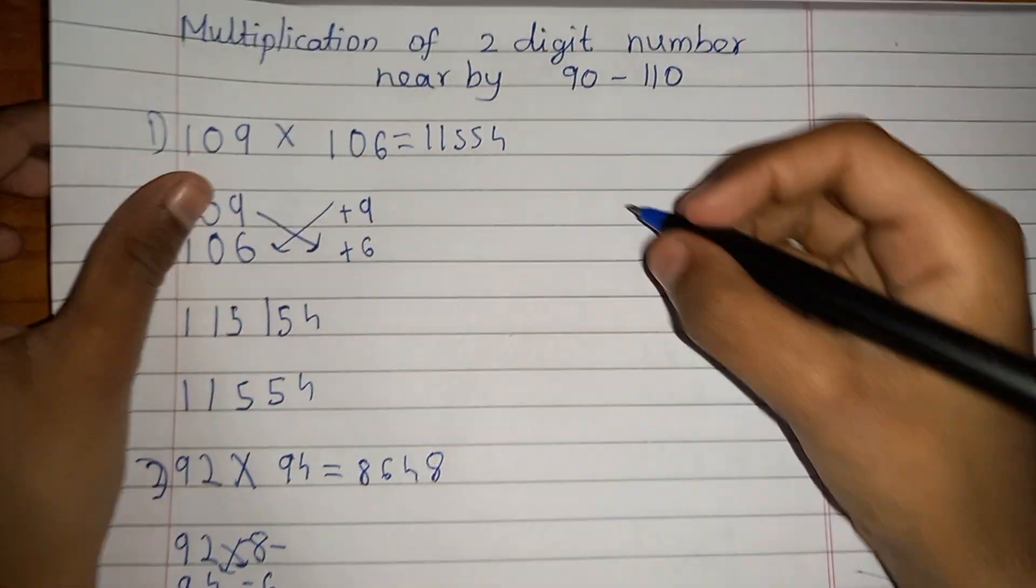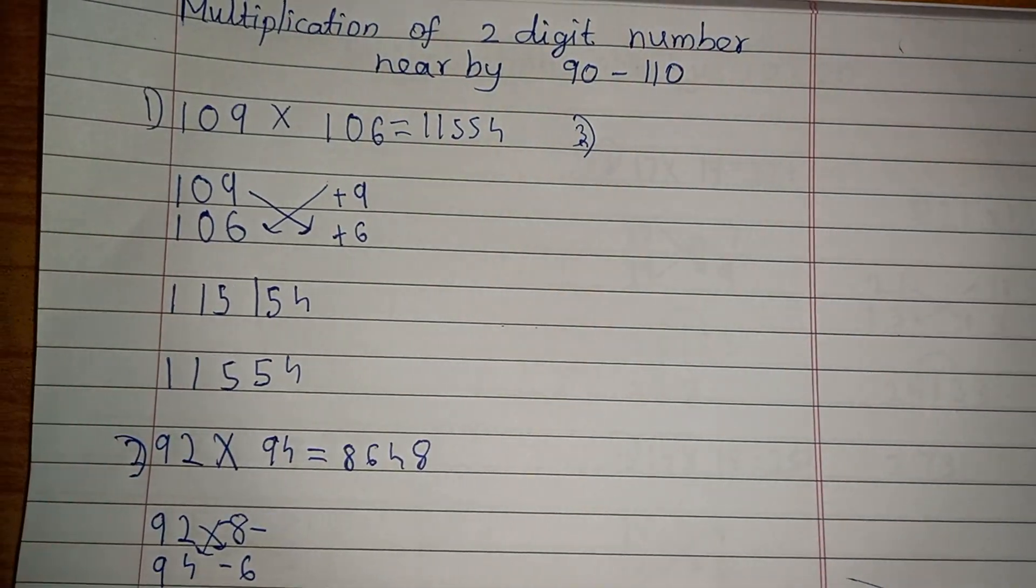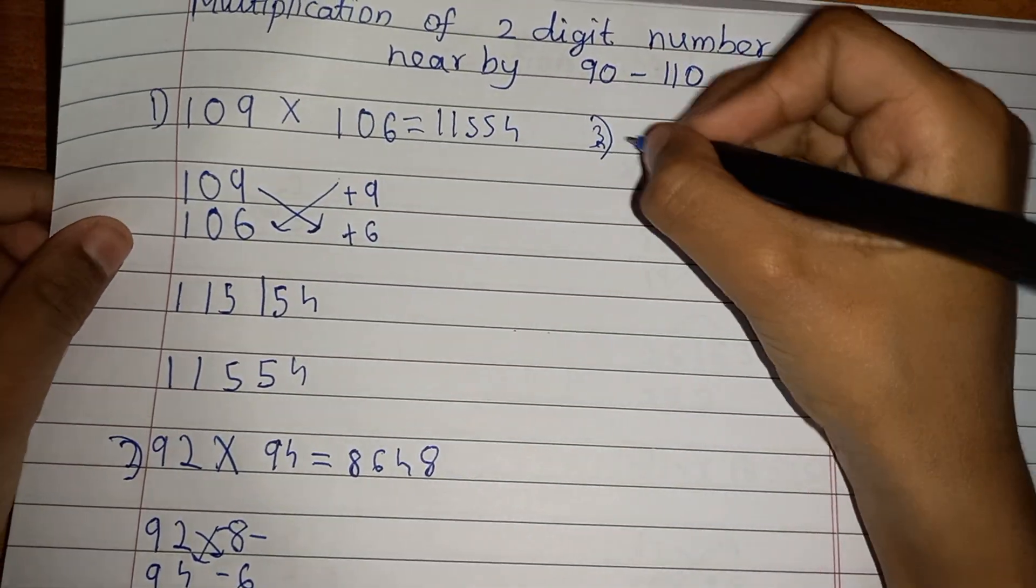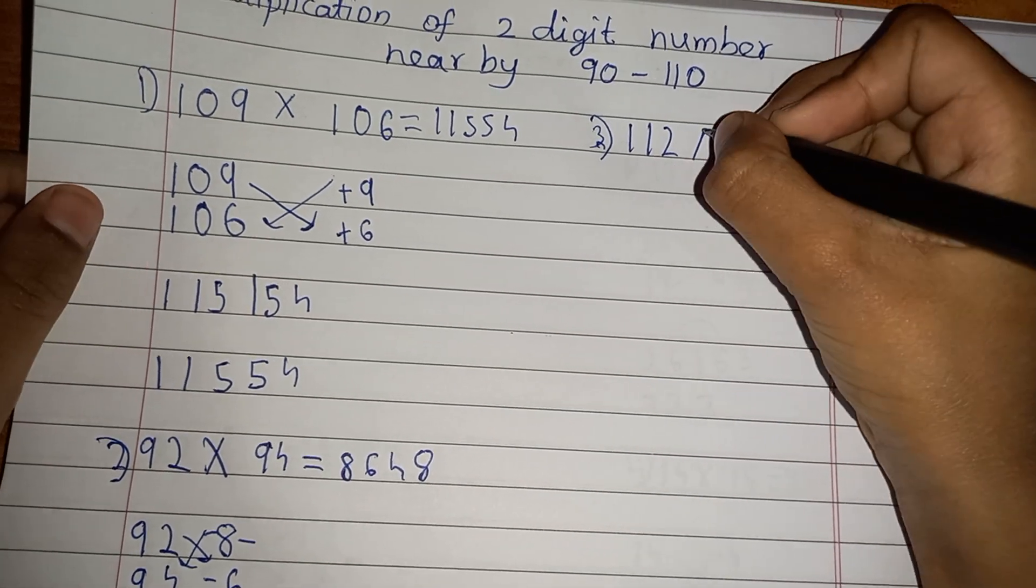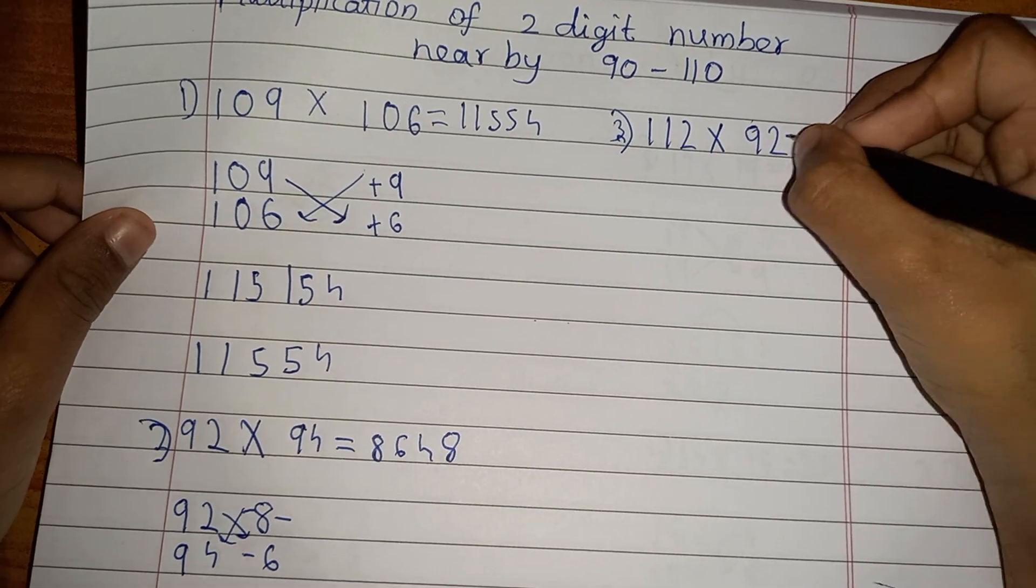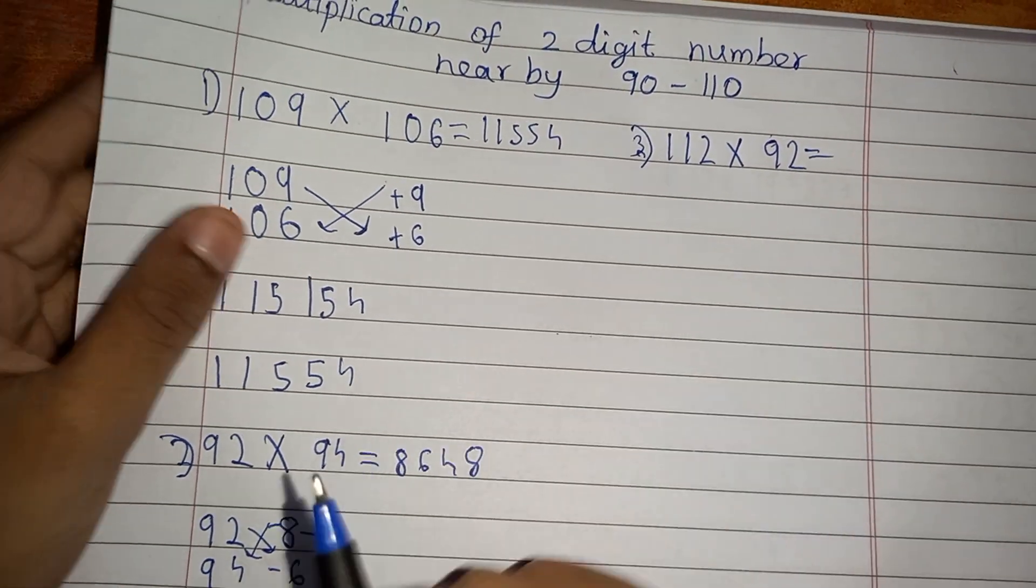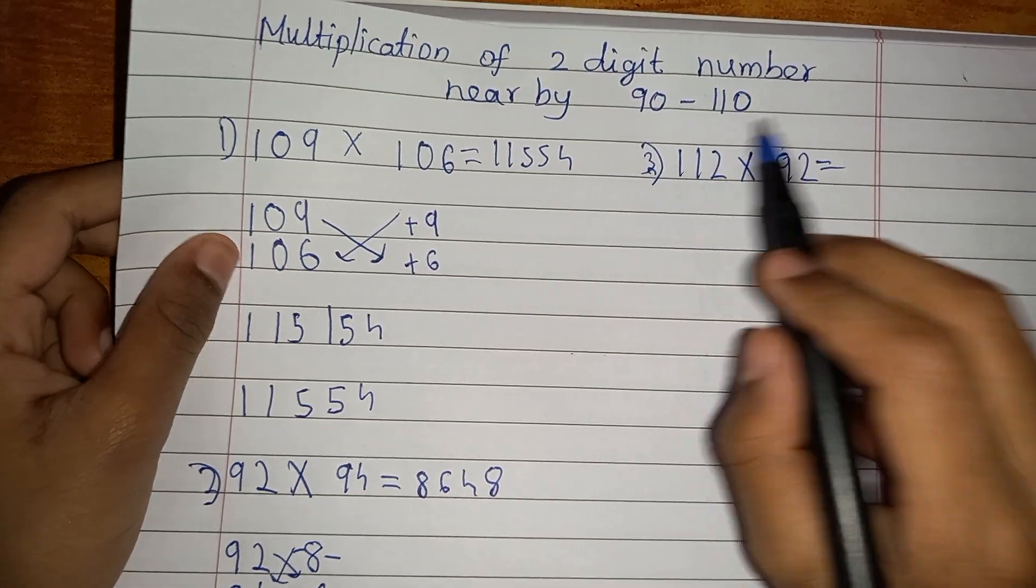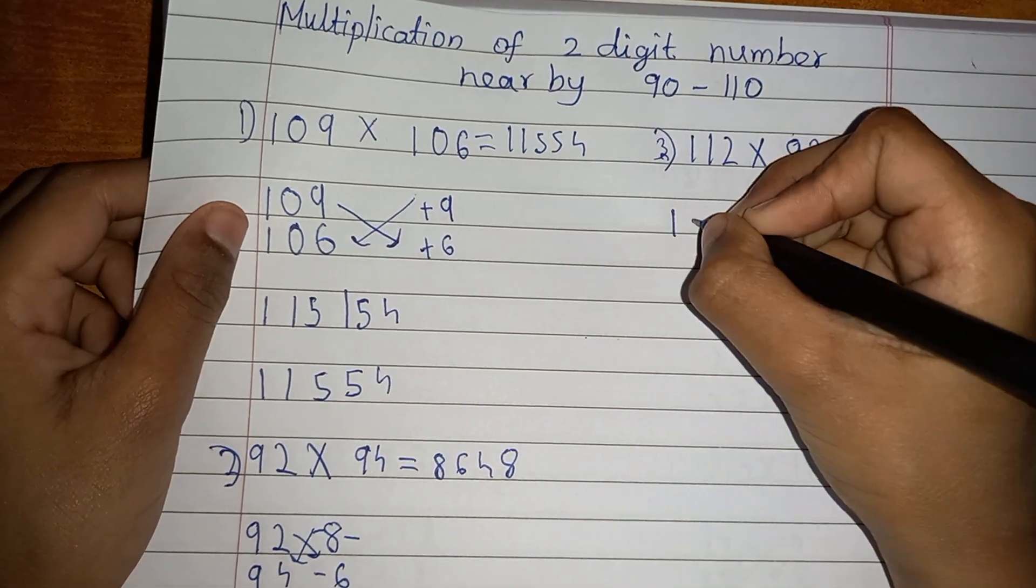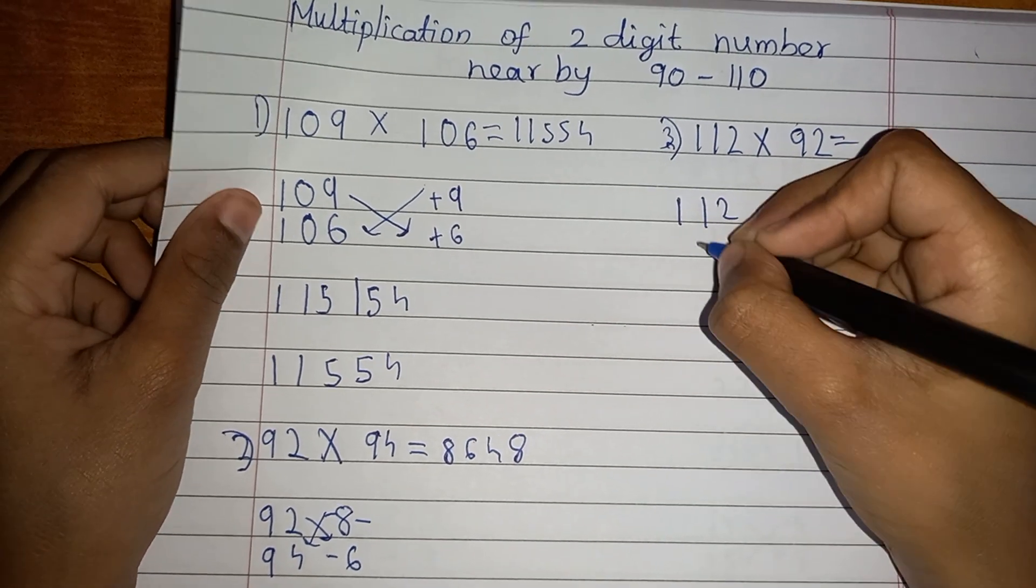Well, let me go to the next one. The next one I'm going to show you guys is 112 multiplied by 92. So let's see how we can do this. It's also the same like that, but this time we'll get one plus and one minus. So let's see how we can do that. But before that, we'll write the numbers.